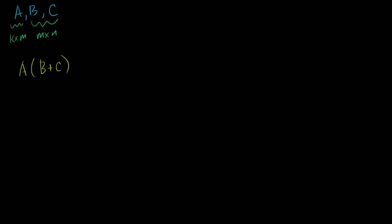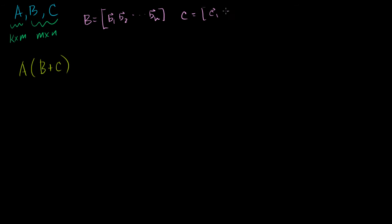The matrix B can be represented as just a bunch of column vectors: B1, B2, all the way to Bn. And the matrix C can also be represented as just a bunch of column vectors: C1, C2, all the way to Cn.